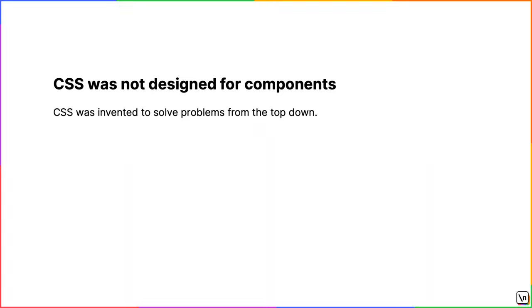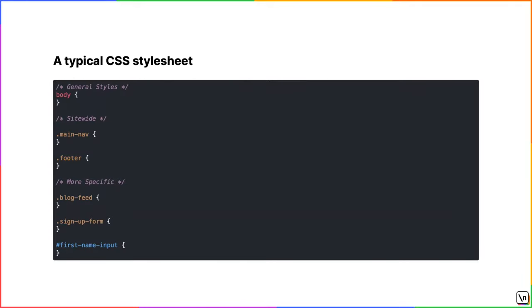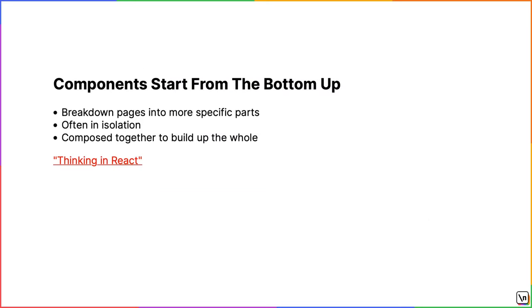Unfortunately, CSS was invented to solve problems from the top down — from general rules down to more specific rules. A typical CSS style sheet is probably organized something like this, with general styles like your body at the top, more site-wide general rules like your main nav or footer, and then more specific rules like your blog feed post, your signup form, or your first name input. On the other hand, components encourage you to start from the bottom up, breaking your page down into more specific parts first, often in isolation from the whole, and then composing them together to build up that whole.